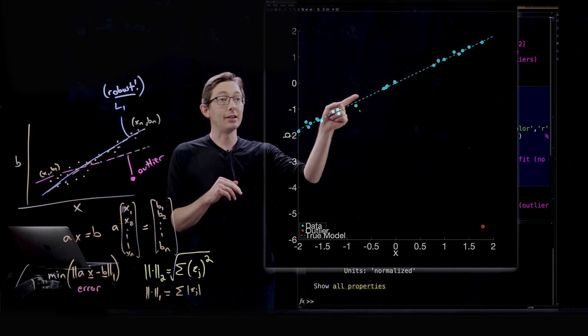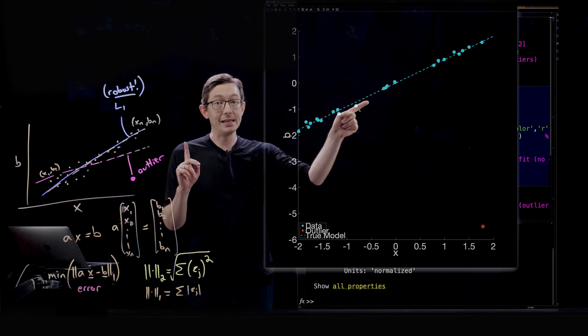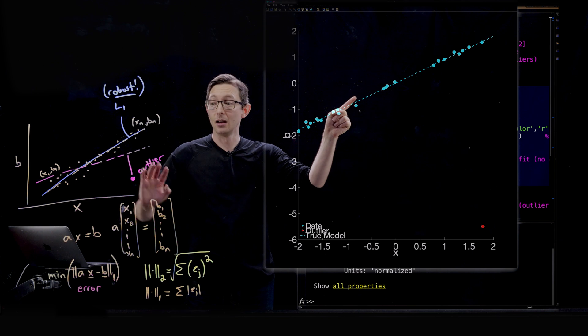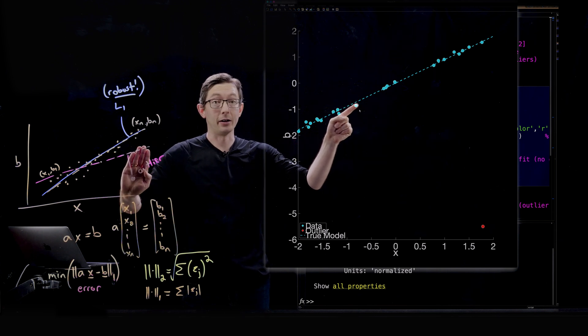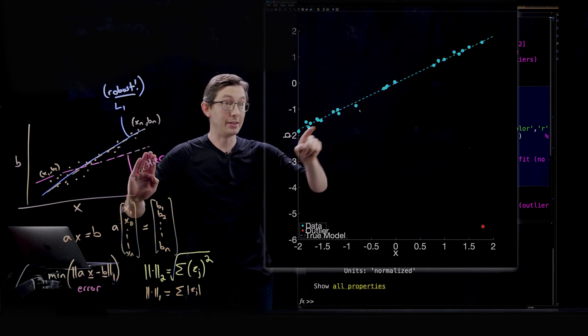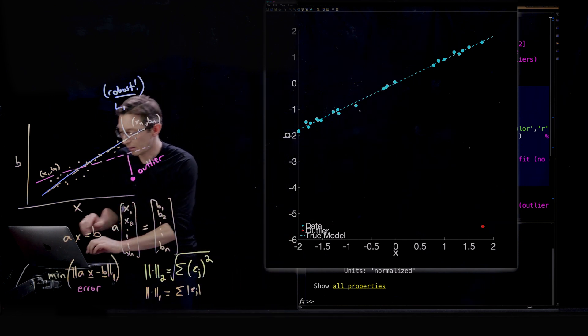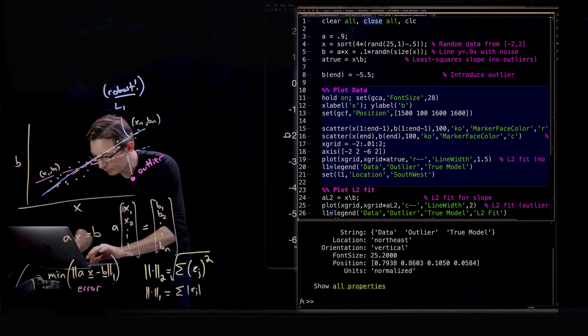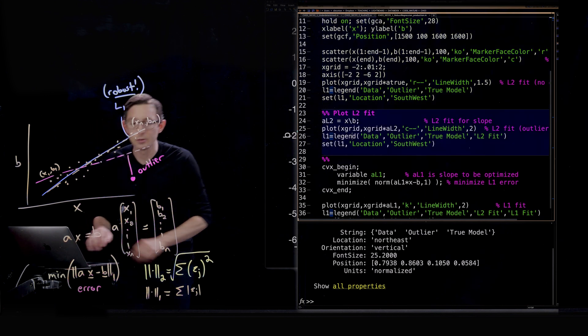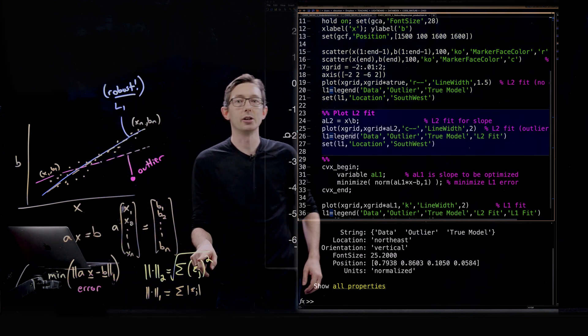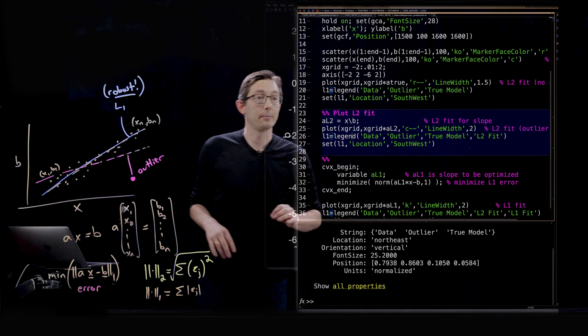This blue line here is the least squares estimate if there was no outlier. If you remove that outlier then the least squares estimate is pretty good. But now what we're going to do is we're going to compute the L2 fit, this kind of least squares solution with this big outlier.